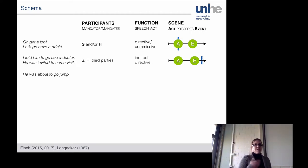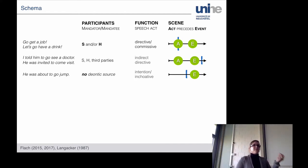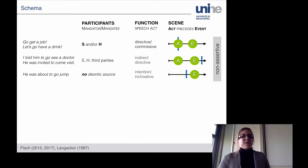Further removed, even from the core and the extensions, are examples such as this. He was about to go jump, where you have no deontic source, no mandator, mandatee. And you don't really have a speech act in that sense, but you have something that is intended or imminent. So you have some reference point that precedes the event that is being prospected, but you don't really have a speech act in that sense. Okay, so this is usually what we refer to as non-assertive, non-assertiveness.